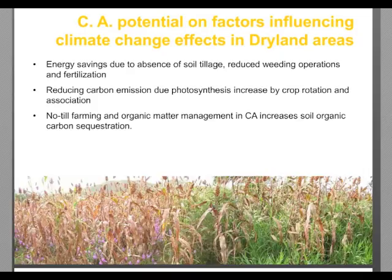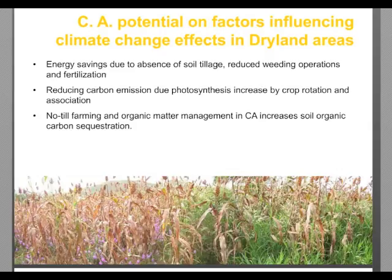Regarding CA's potential on determinants — the factors influencing climate change in dryland areas — there are specifically three points. The first is energy savings due to absence of soil tillage: fewer weeding, fertilization, and other technical operations result in energy savings. Second, CA reduces carbon emissions through increased photosynthesis via crop rotation and association. Third, no-till farming and organic matter management in CA increases soil organic carbon sequestration.